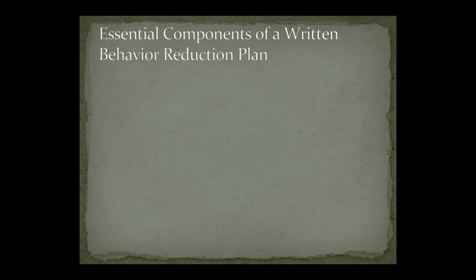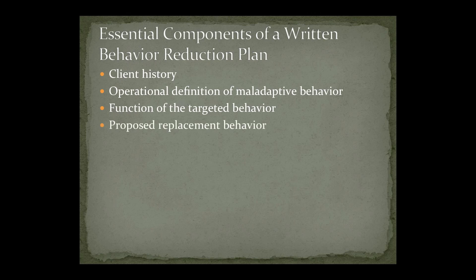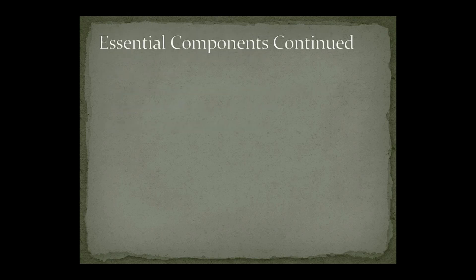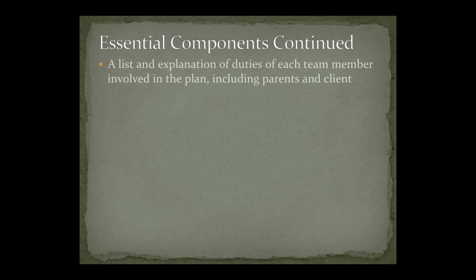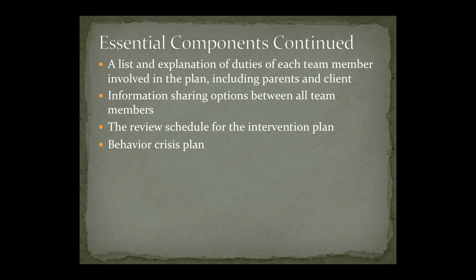Essential components of a written behavior reduction plan include the client history, operational definition of maladaptive behavior, the function of the targeted behavior, and the proposed replacement behavior. The plan also includes a list and explanation of duties of each team member involved, including parents and client, information sharing options between all team members, a scheduled review of the intervention plan, and a crisis plan.